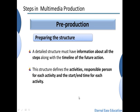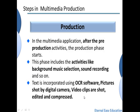After the pre-production activities, the production phase starts. This includes activities like background music selection, sound recording, and so on. Text is incorporated with OCR software, pictures are shot by digital camera, video clips are shot, edited, and compressed. Similar to film making — after the shooting, post-production involves re-recording, background music, and dubbing. Likewise, after the structure is complete, these activities are involved in the production phase.